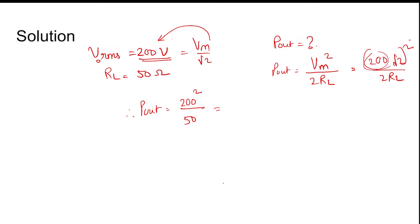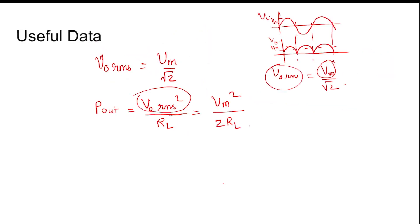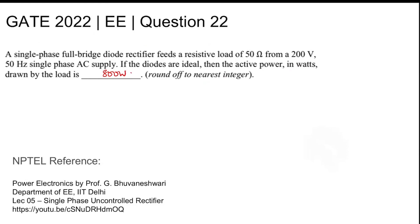And 200 squared by RL, so 200 squared by 50 is the answer. So 200 times 200 divided by 50 watts, which comes out as 800 watts. So the answer is 800 watts.